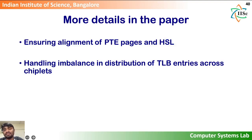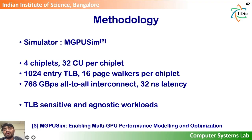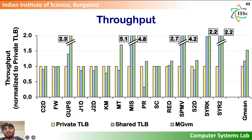There are other challenges we faced with MGVM, like ensuring alignment of PTE pages and HSL, and handling imbalance in the distribution of TLB entries across chiplets. We refer the viewer to our paper for more details. For evaluation, we simulated an MCM GPU with 4 chiplets and an interconnect latency of 32 nanoseconds one way, studying both TLB-sensitive and TLB-agnostic workloads. MGVM performs around 50% better than private TLB configuration and around 30% better than shared. For each application, MGVM performs better than or as well as the better-performing alternative among private or shared.